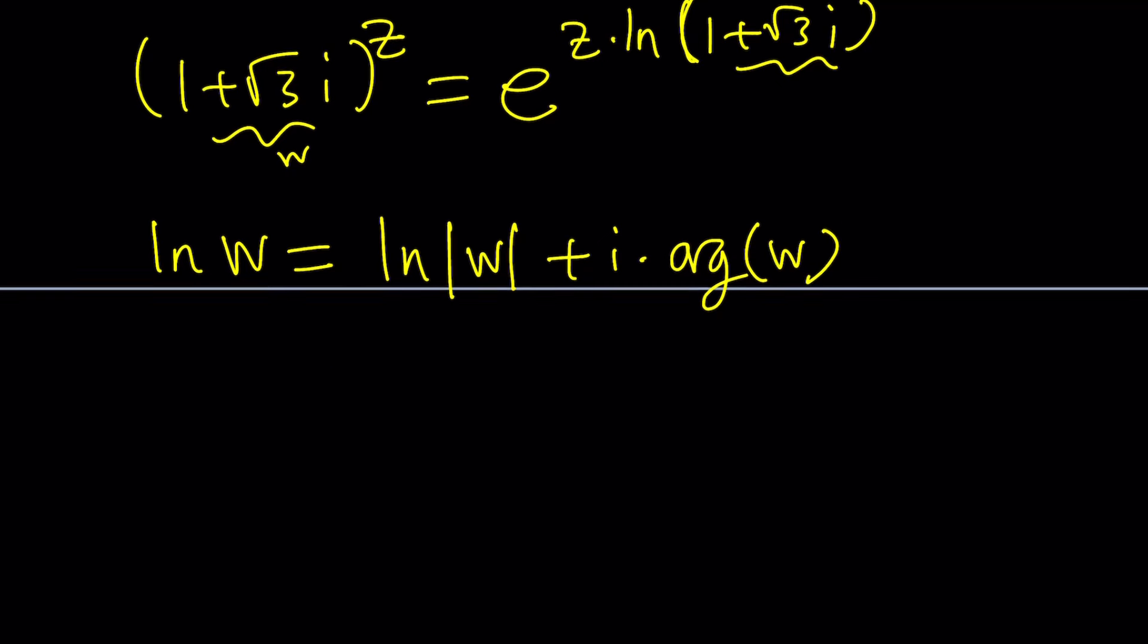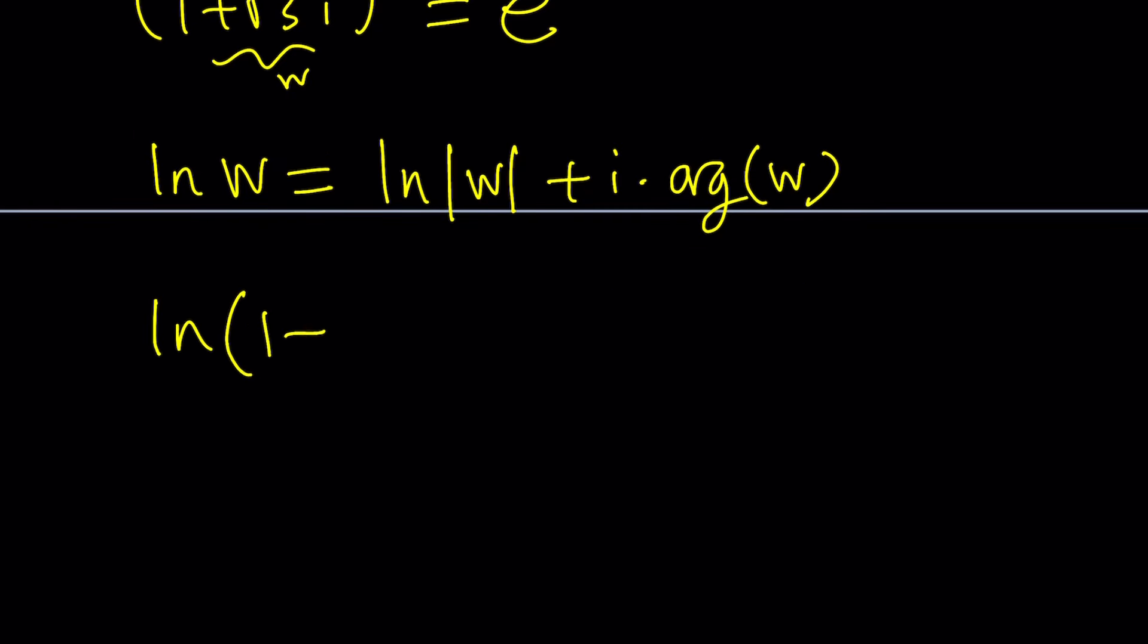So from here, by this definition, ln(1 + √3i) would be ln 2, because that's the absolute value, plus i·π/3. Again, you can add multiples of 2π like 2πn to this if you want, but I'm going to skip that part.